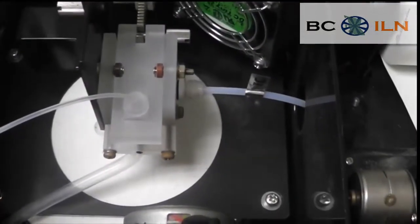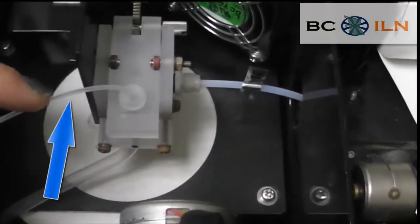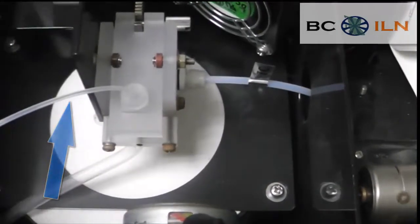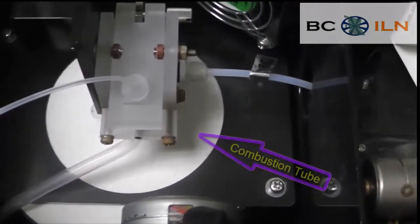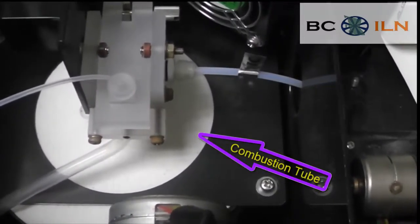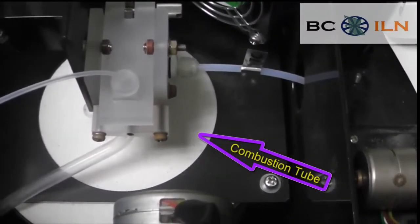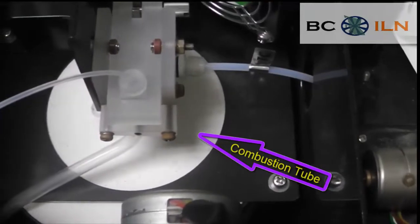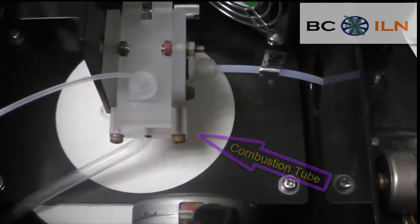The first sample has been drawn up through the needle. It goes through this tube here and goes into the combustion tube, where the temperature is at 720 degrees Celsius. This extremely high temperature decomposes the total nitrogen in the sample to nitric oxide.